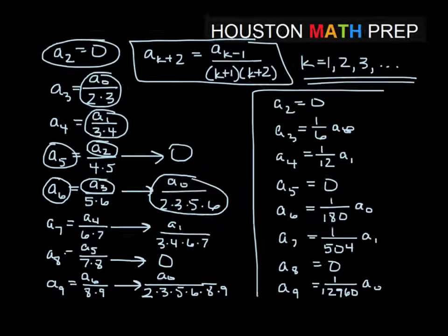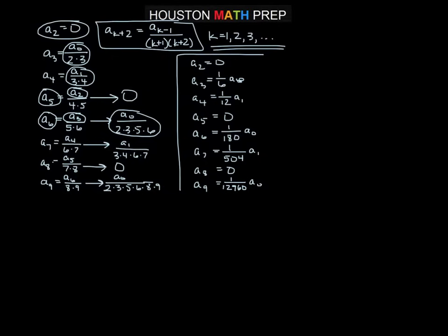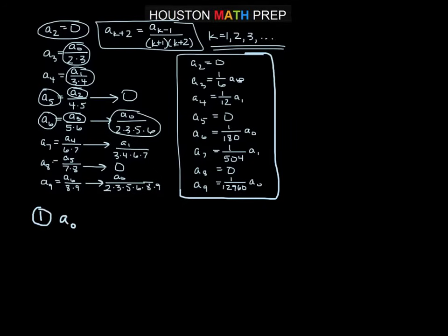Since a sub 0 and a sub 1 are arbitrary, we choose easy values — not 0 for both, or everything disappears. For the first solution, choose a sub 0 equals 1 and a sub 1 equals 0. For the second solution, choose a sub 0 equals 0 and a sub 1 equals 1.